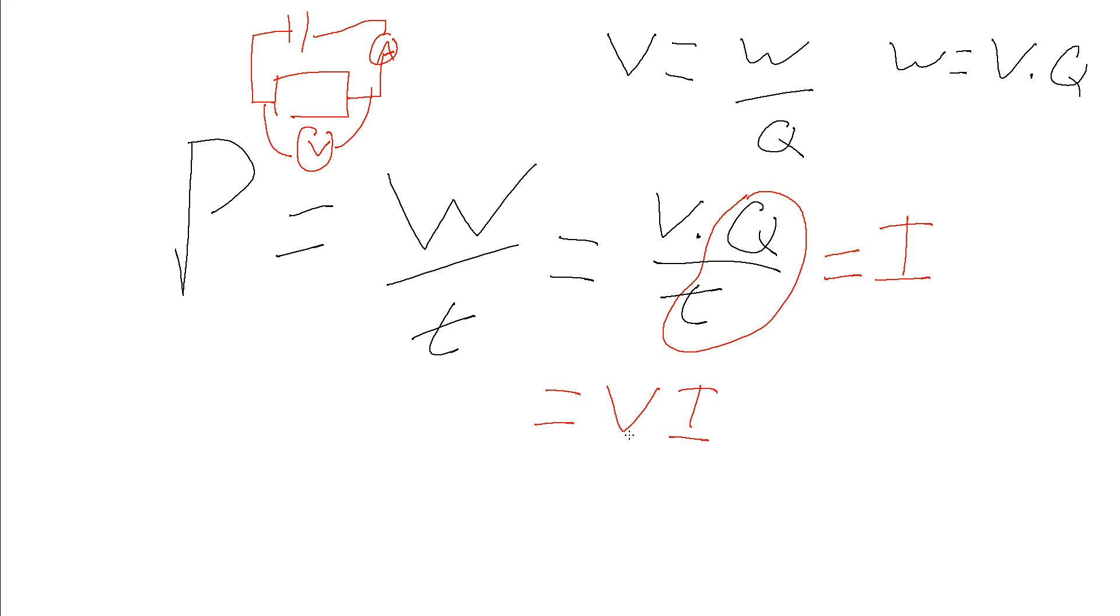So this is the equation that we would use to determine the electrical power either being dissipated by some voltage sink across a potential difference or being generated by a voltage source, an EMF.